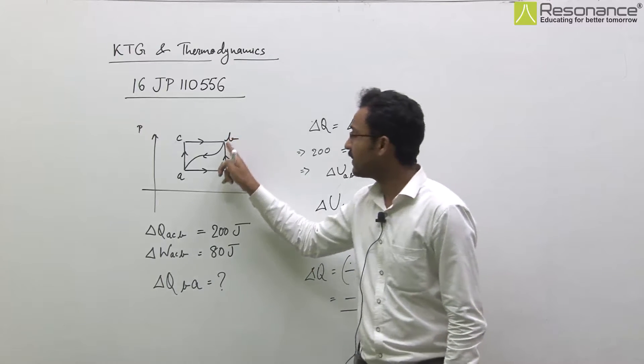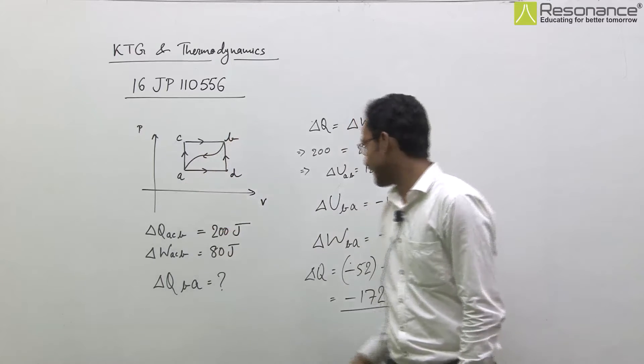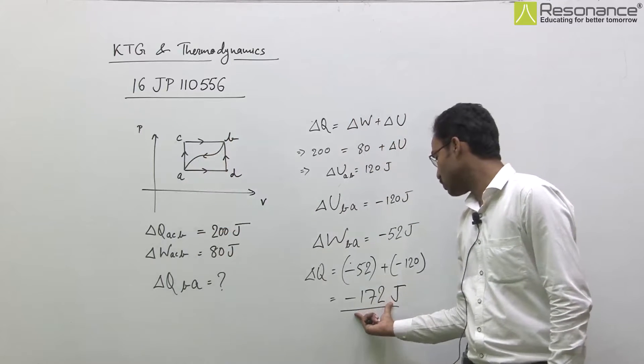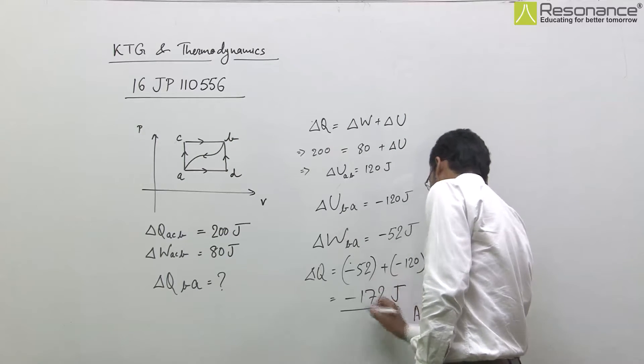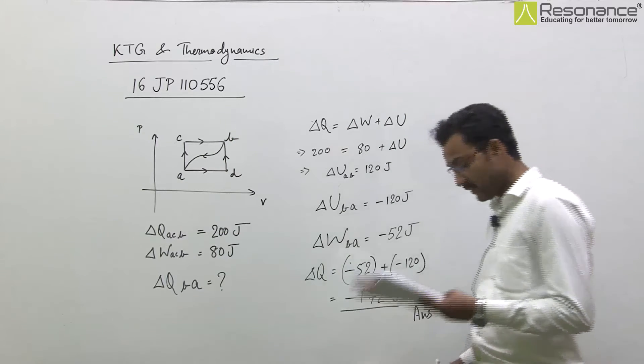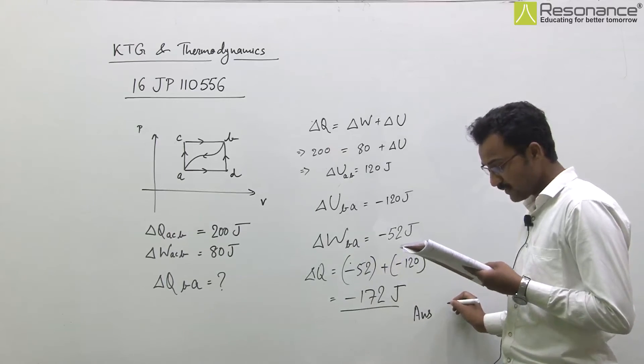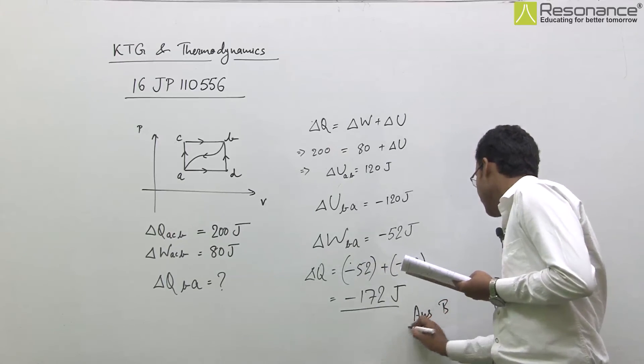It means heat absorbed by the gas is minus 172 joule, or heat is rejected by the gas is equal to 172 joule. Then correct answer will be B.